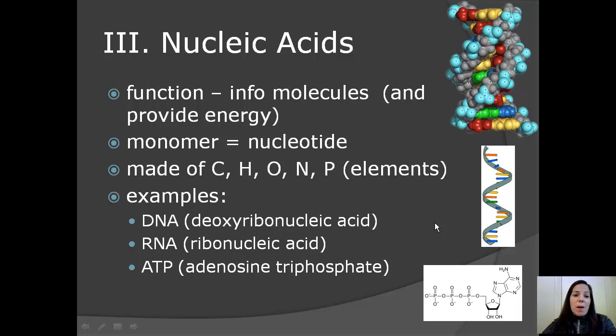Nucleic acids is the third biomolecule that we're going over in Unit C. The function of nucleic acids is to provide information. Also, ATP provides energy. The monomer of nucleic acids is nucleotides. So many nucleotides make up a nucleic acid. All nucleic acids are composed of carbon, hydrogen, oxygen, nitrogen, and phosphate, which are the elements from the periodic table.